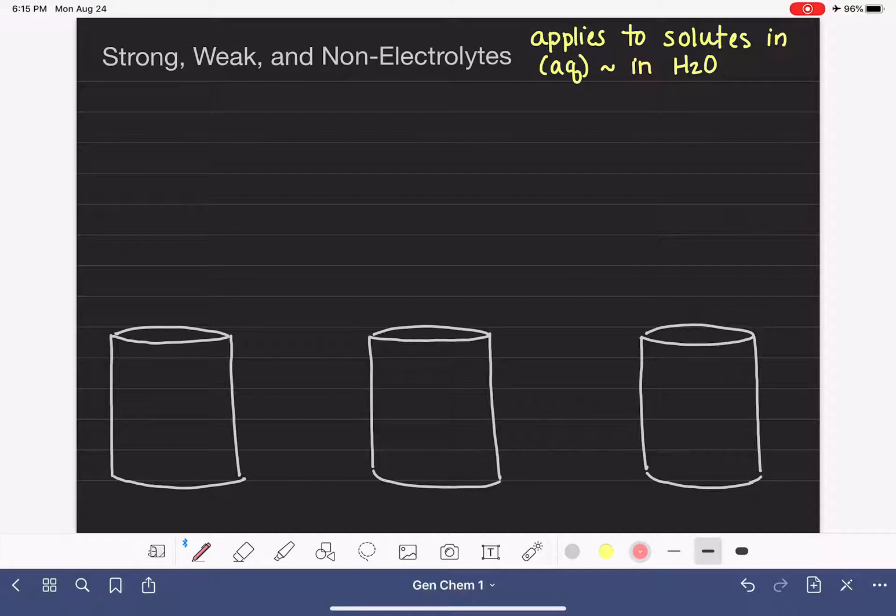Let's get started first with the strong electrolyte. A strong electrolyte is one that completely dissociates in solution. Or we could be even more specific and say that it completely dissociates when we put it in water.